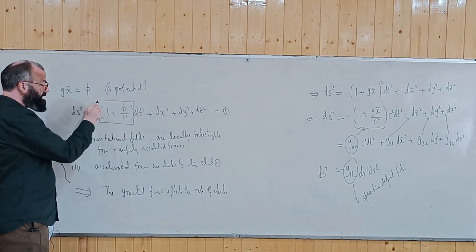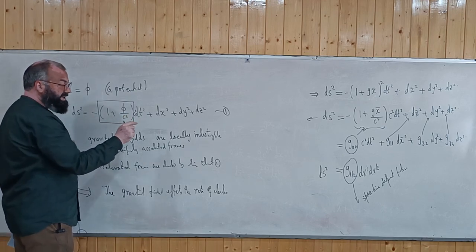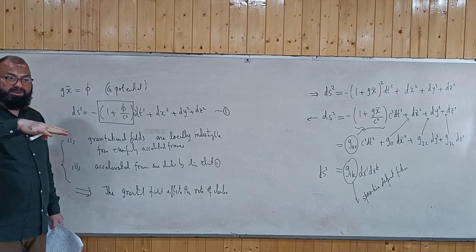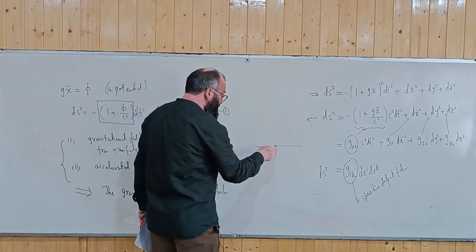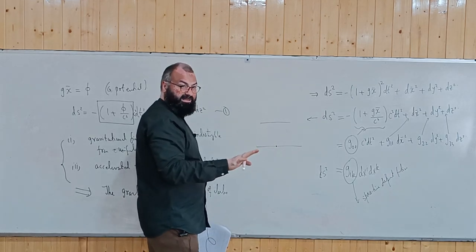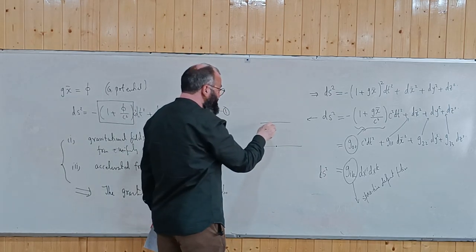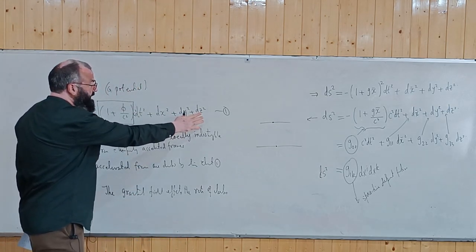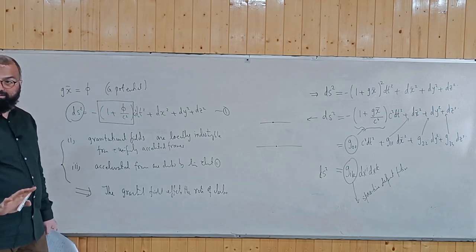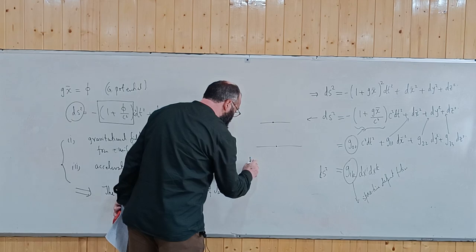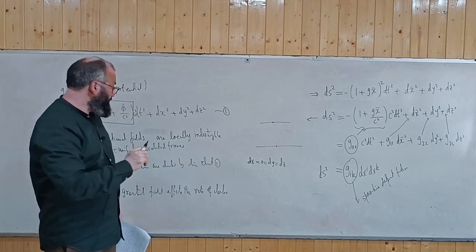Consider you are in a stationary frame of reference, sitting at one position and moving only in the time direction, so dx = dy = dz = 0. In that case, ds gives the proper time. The proper time is given by tau = sqrt(-ds²)/c. With dx = 0, this becomes simply sqrt(g_00(x)) times c dt divided by c. That means for a clock at rest, the proper time is (1 + phi/c²) times t.